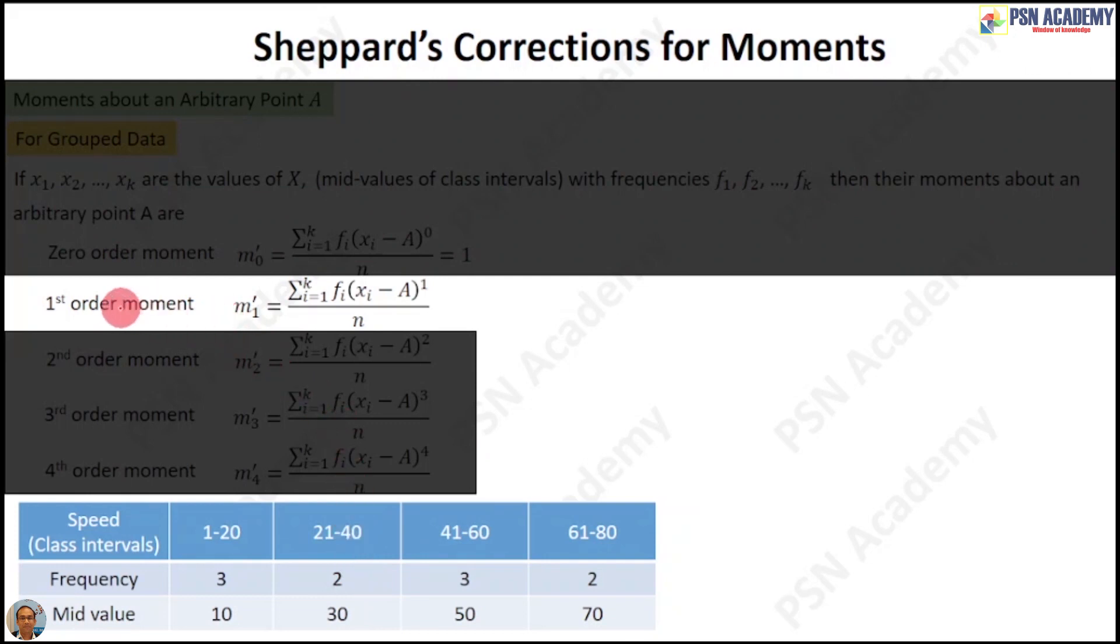For simplicity, we'll consider the first order moment and replace A with 0 so the moment is computed based on the origin. Now how we have done before? We have done like this: 3 times (10 - 0) plus 2 times (30 - 0). This 3 is the frequency and we take the deviation of 10 from 0, that is 10 actually, and we did the same operation for the other class intervals.